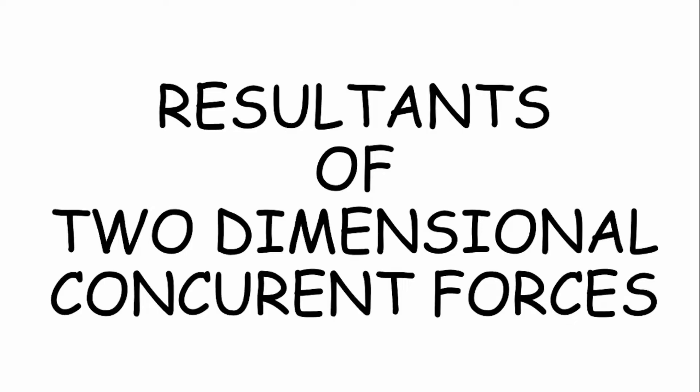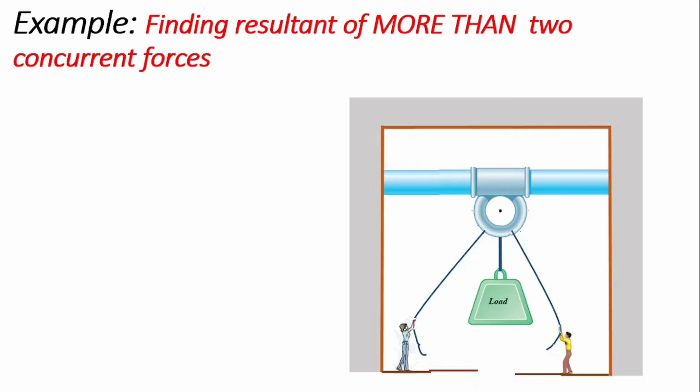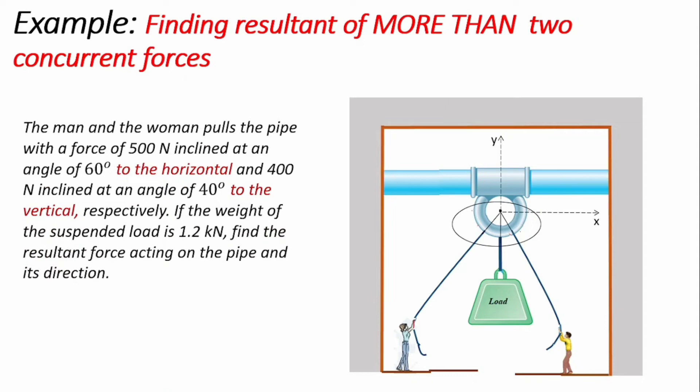Welcome to AOE Solutions channel. In today's video I'll be presenting the resultants of two-dimensional concurrent forces. I'm going to look at an example that involves finding the resultant of more than two concurrent forces. We have three forces: a weight suspended on the pipe, and two people — a man and a woman — pulling the pipe attached to the wall. We introduce a coordinate system showing the x and y directions, and we can see that these forces are all meeting at one point, so they are concurrent forces.